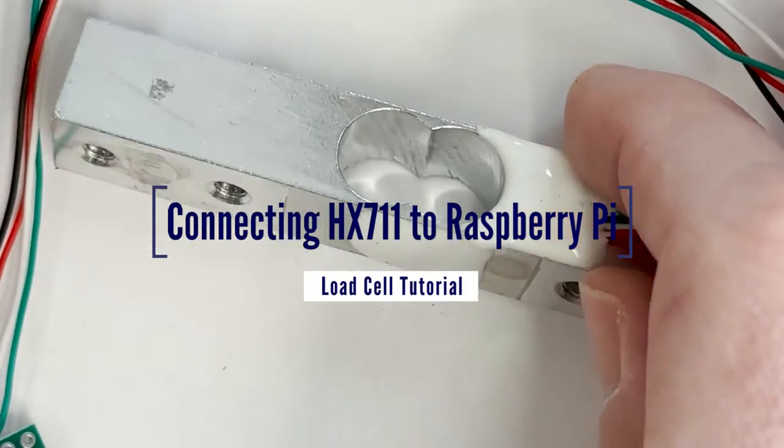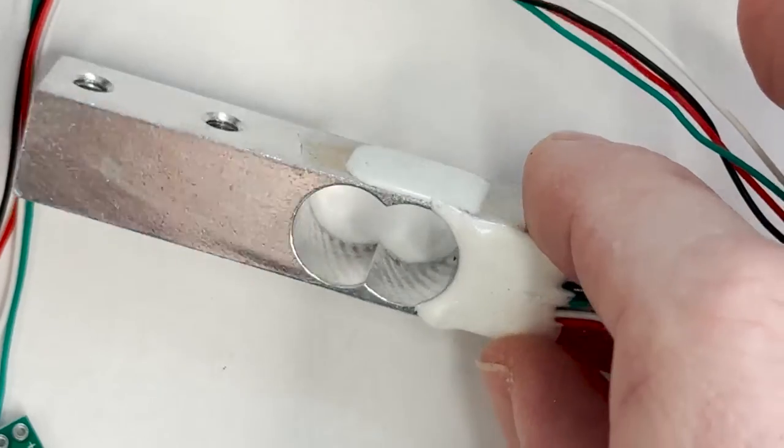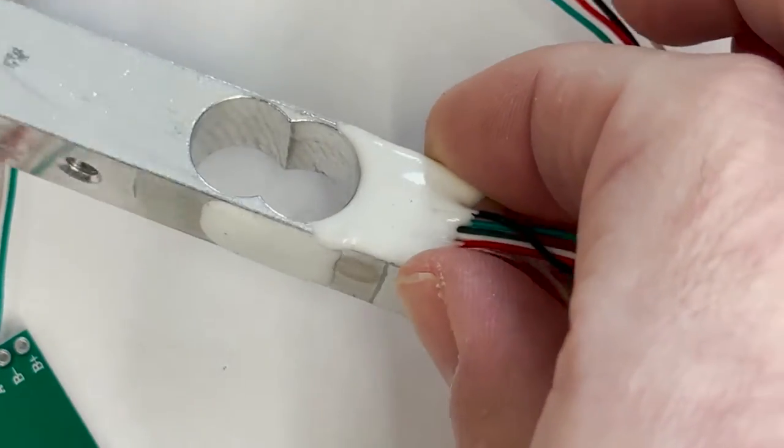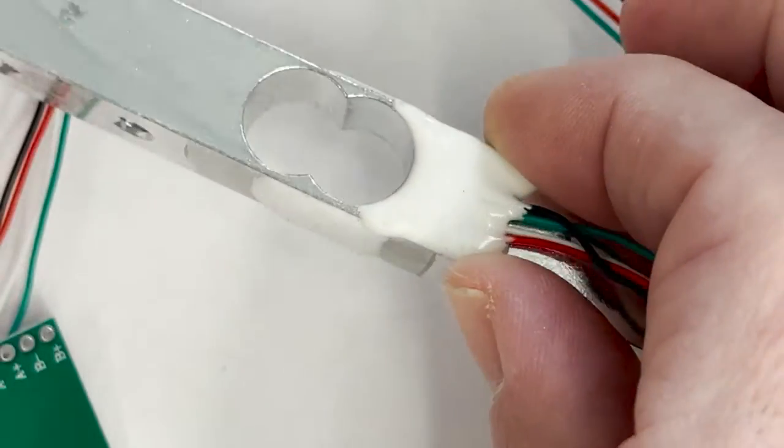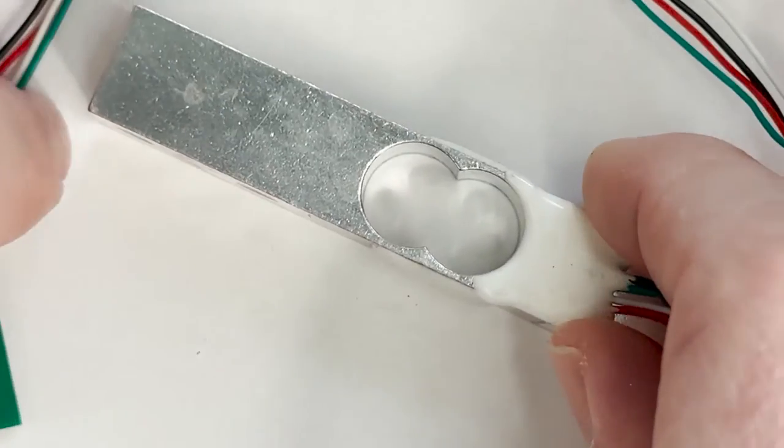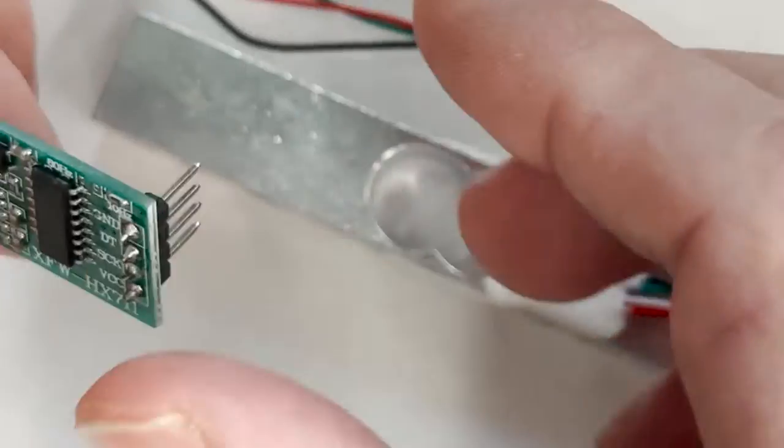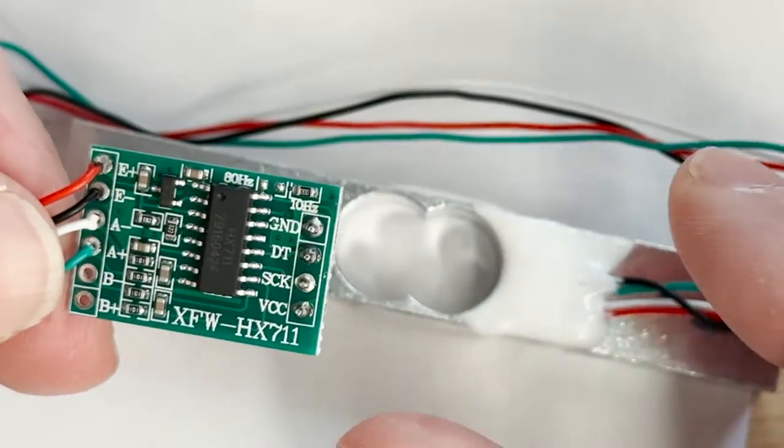So we have this load cell here with the strain gauges attached. The strain gauges are embedded in that paste there, and then we have that hooked up to an amplifier circuit here which we're going to connect up to the Raspberry Pi.